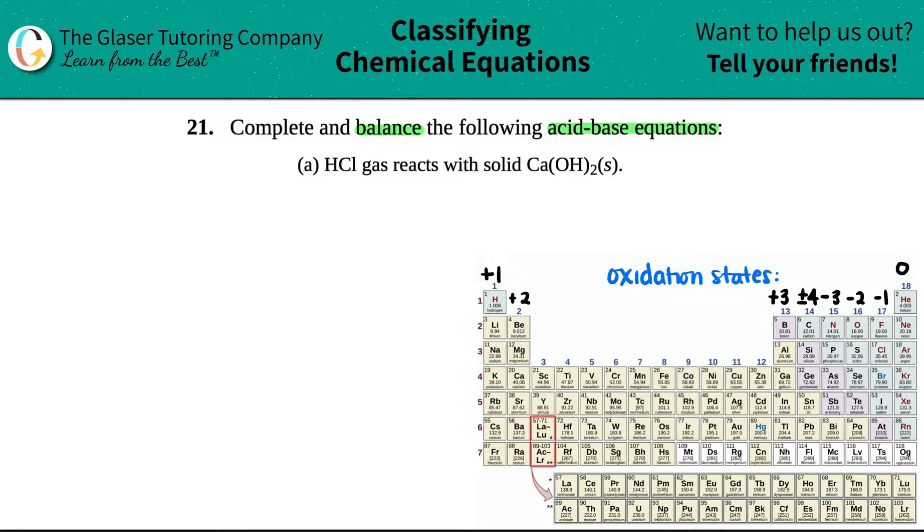We need to complete and balance the reaction in which HCl gas reacts with solid calcium hydroxide, Ca(OH)2 solid. Now, the good thing about acid-base reactions is that they're just fancy double displacement reactions. So we're going to be doing this the same way in which we would be balancing or completing a double displacement or a double replacement reaction.